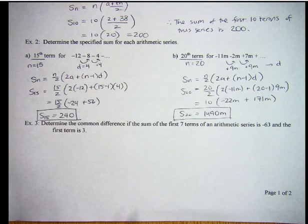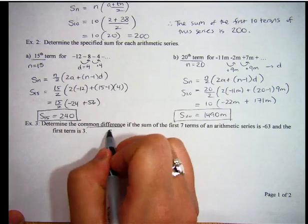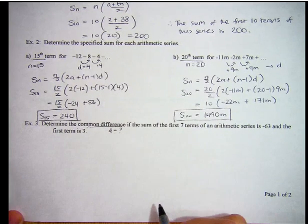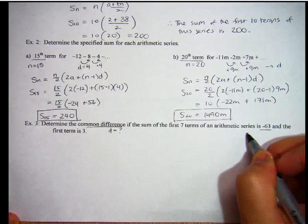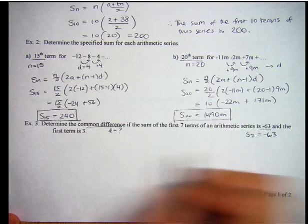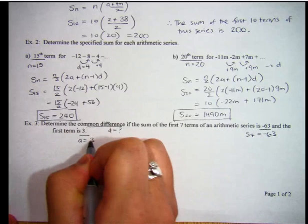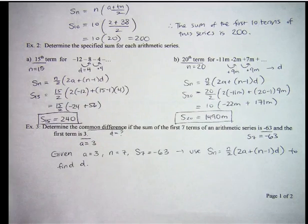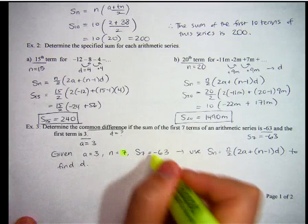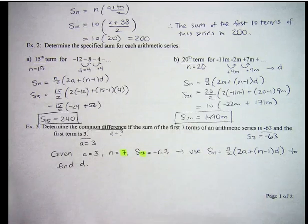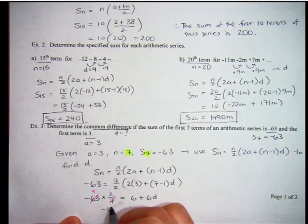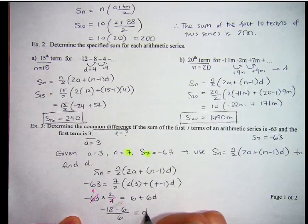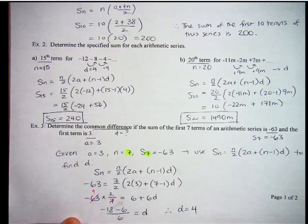Alright, last example. Determine the common difference, so we want to find D. If the sum of the first 7 terms in the arithmetic series is negative 63, and the first term is 3. Alright, so based on the given information, we're going to use the second formula to find D. So plug everything in, rearrange your equation to solve for D. Okay, so negative 18 minus 6 divided by 6 gives us D, and D equals negative 4. Done.